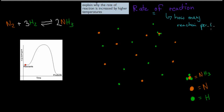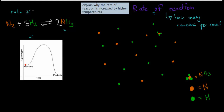What is a reaction? For example, a reaction would be this: we have nitrogen plus 3 moles of hydrogen gas combined to form 1 mole of ammonia. And this is one reaction. So if these combine to form this, this would be one reaction.